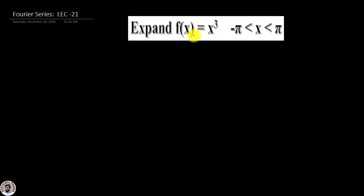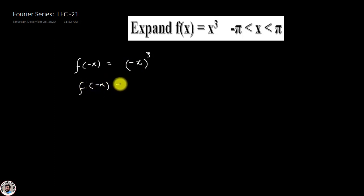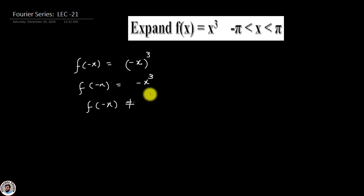First we have to check whether this function is even or odd. For this we replace x by -x. When we replace x by -x, f(-x) = -x³, which means f(-x) ≠ f(x). Therefore we can say that this given function is an odd function.